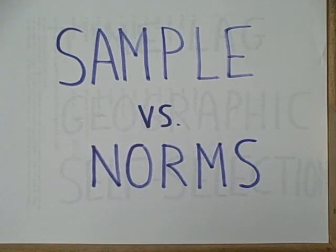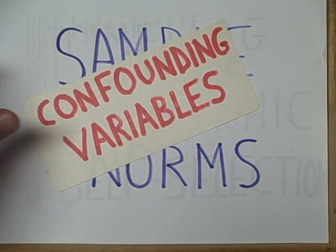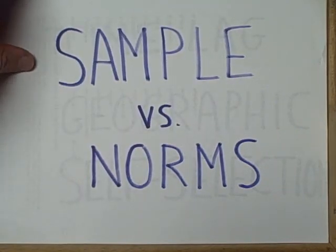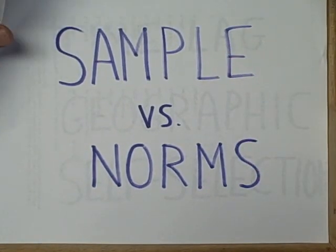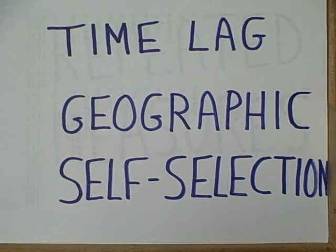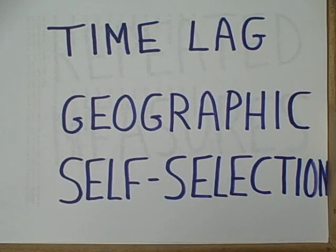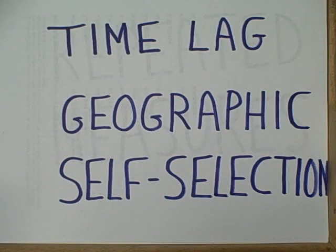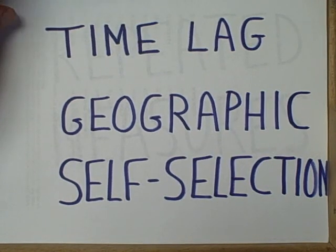When we do a sample versus norms design, there are going to be some problems, and these largely center around confounding variables. One is the idea that there might be a time lag between when the norms were established and when our sample was done. Another problem would be geographical differences. Usually norms are nationwide or worldwide, but samples are geographically based, so it's not clear if any difference we see reflects the geographic area sampled or the defining characteristics of our sample.